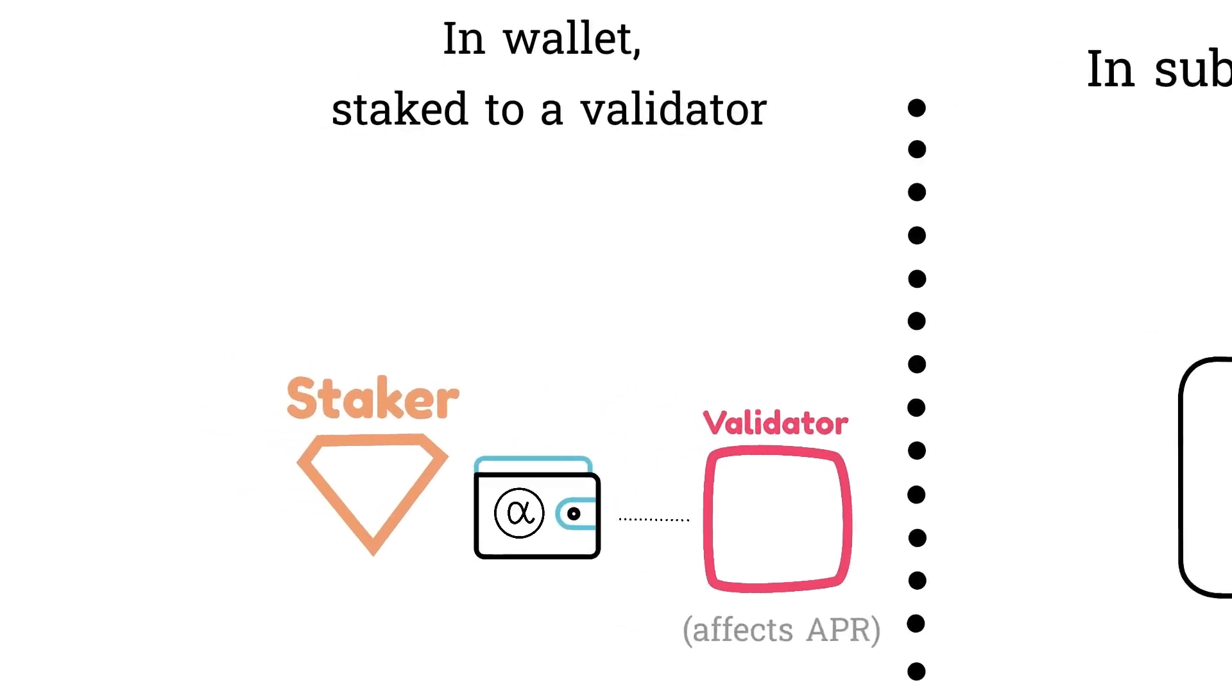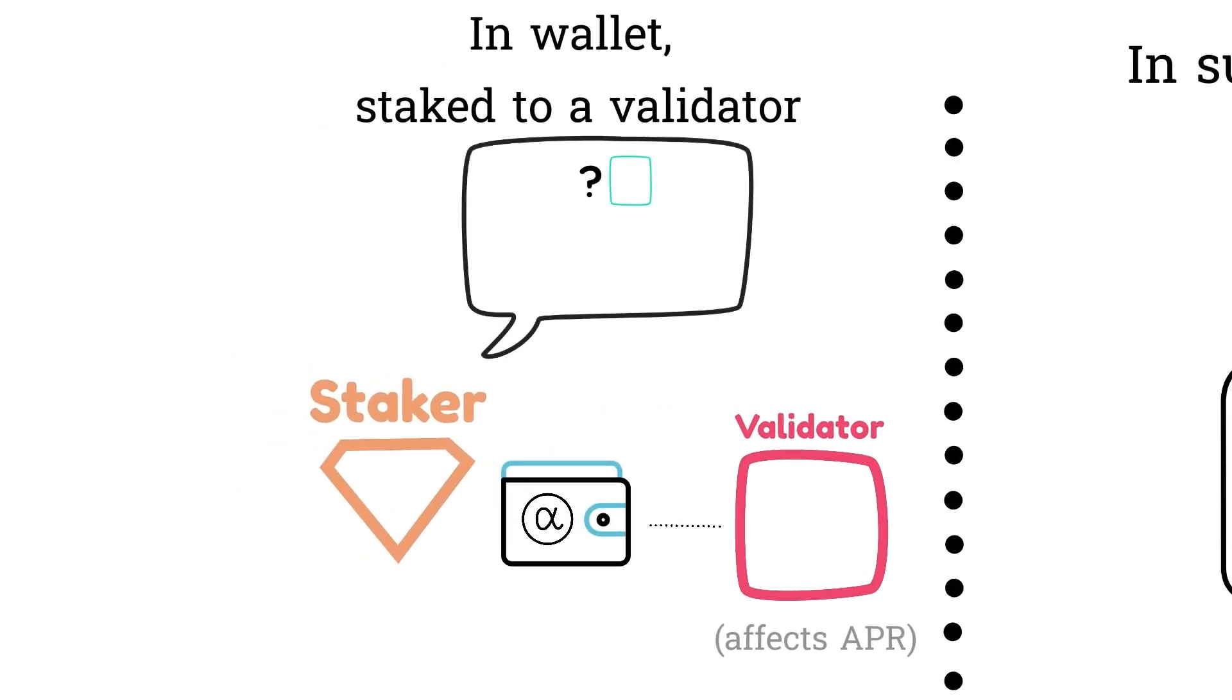So when you go to purchase alpha, you'll be prompted to choose which subnet, how much alpha, and which validator to stake your alpha with.